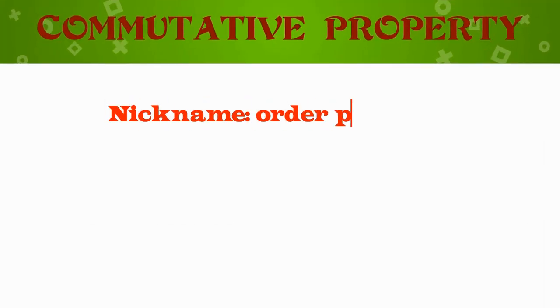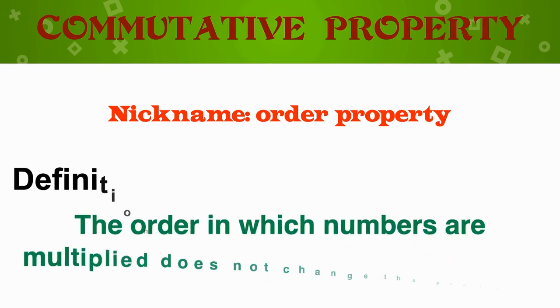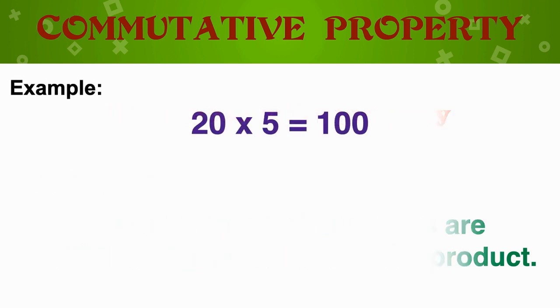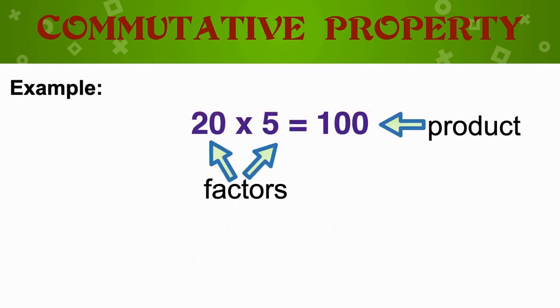The commutative property, otherwise known as the order property, tells us that the order in which numbers are multiplied does not change the product. Let's look at this example: 20 times 5 is equal to 100. The factors are 20 and 5, and the product is 100.